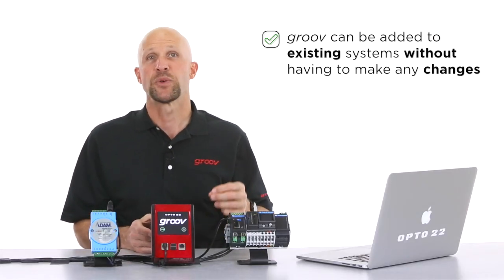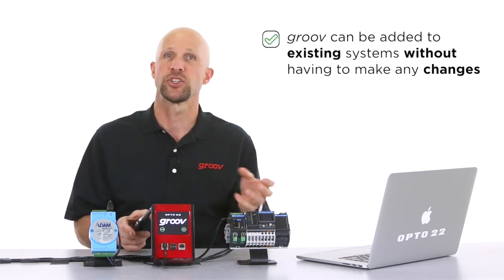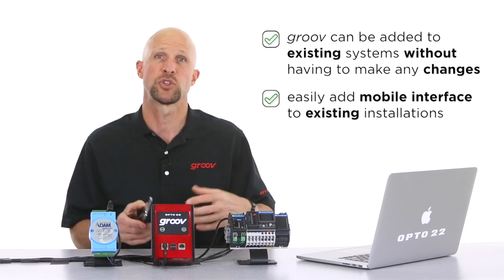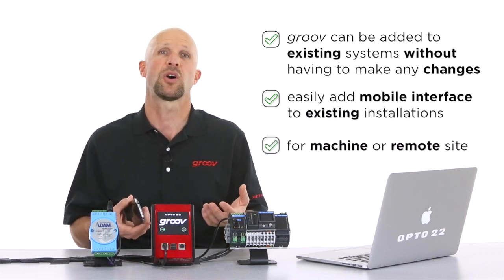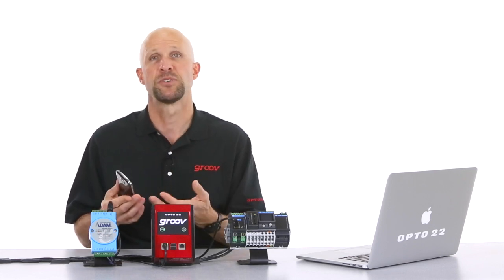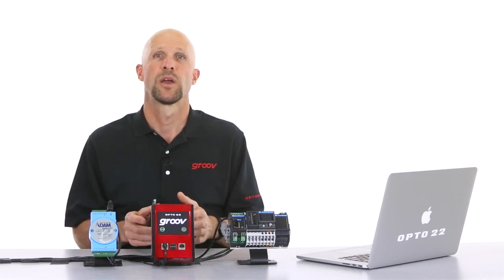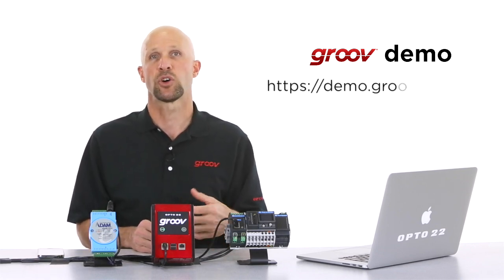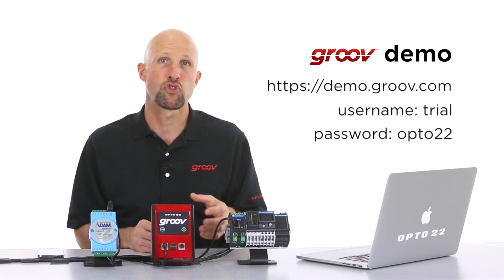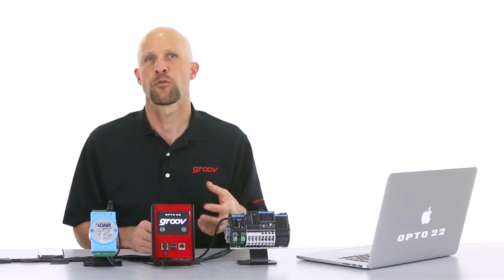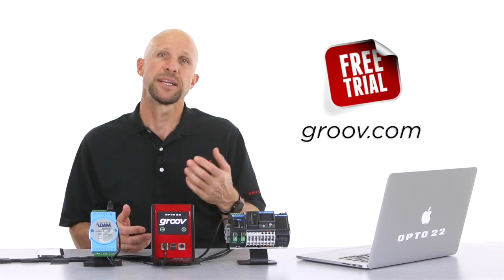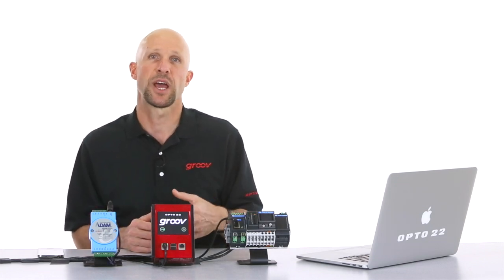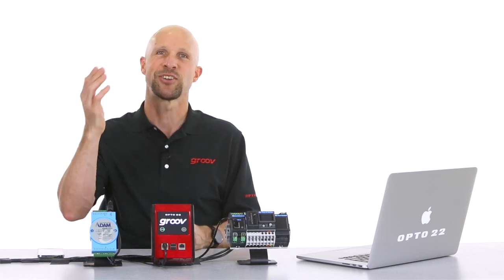In many cases Groove can be added to an existing system without having to make any changes to that current setup, just like in this demo. This means it's a really simple process to add a mobile interface to existing installations — be they a machine or remote site — Groove can add mobile device visibility of the process in just a few minutes. You can check out Groove in action on your mobile or PC by visiting https://demo.groove.com and log in with a username of 'trial' and password 'opto22'. You can also download a free trial of Groove Server for Windows from groove.com and test drive the full-featured version for two hours at a time. There's also a bunch of tutorials and workshop videos on that website, so make sure you check it out. Until next time, cheers mate!